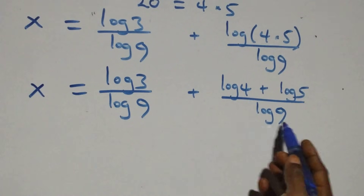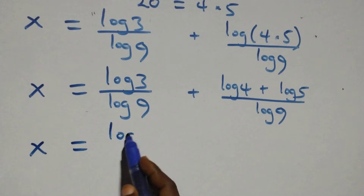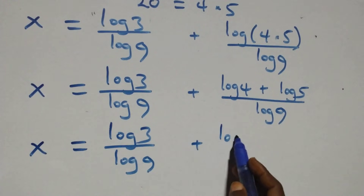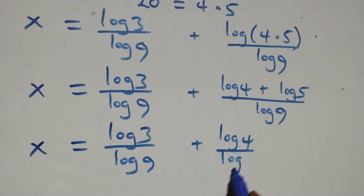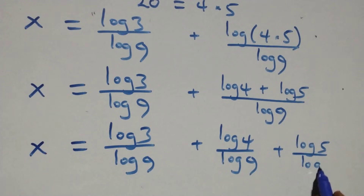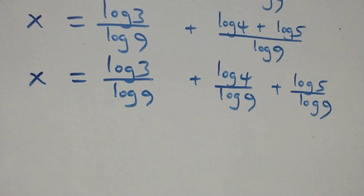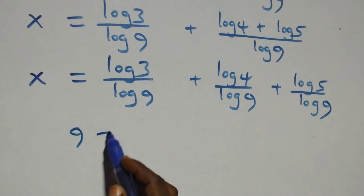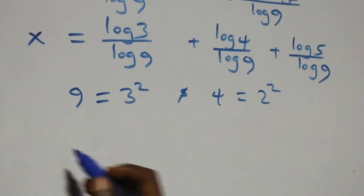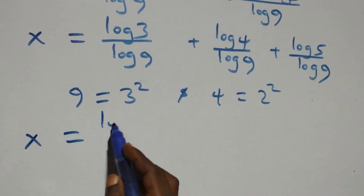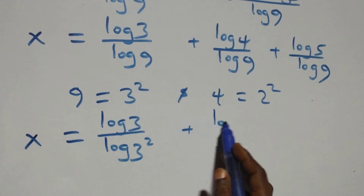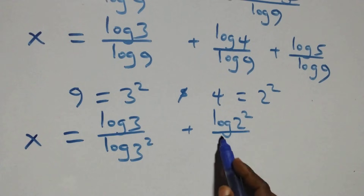We separate further into individual fractions: x equals log 3 over log 9 plus log 4 over log 9 plus log 5 over log 9. From here we express 9 as 3 times 3, that is 3 squared, and also 4 as 2 times 2, that is 2 squared. So x equals log 3 over log(3²) plus log(2²) over log(3²).